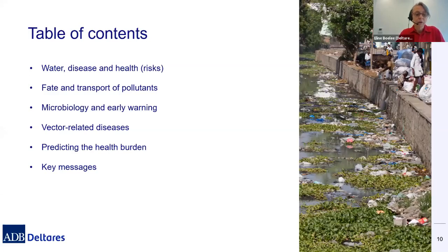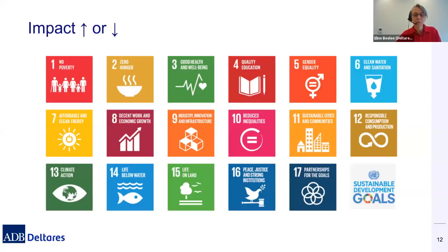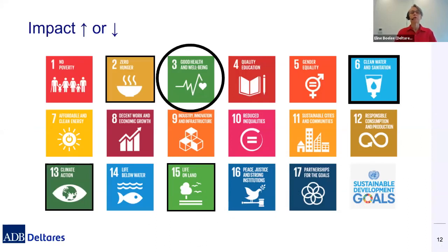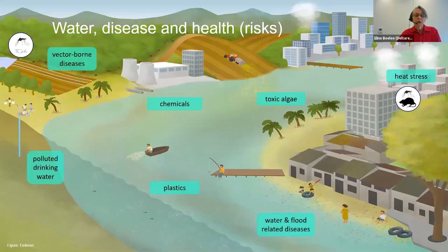We will focus on issues more directly related to water, roughly in three groups: pollutants — the chemical side — microbiology, and then vector-borne diseases. Finally, we look at how we can predict the health burden. Normally we work on SDG 6, clean water and sanitation, and we have links with aquatic ecosystems under SDG 15. We have a link with climate action, and if we provide water for irrigation, we're also looking at SDG 2. We want to increase our impact by at least not negatively affecting human health, but ideally having benefits for human health and well-being.